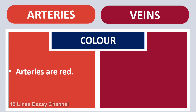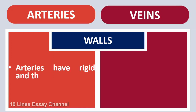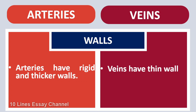Arteries are red. Veins are blue. Arteries have rigid and thicker walls. Veins have thin walls.